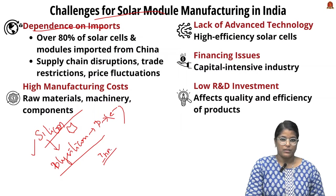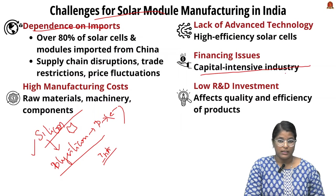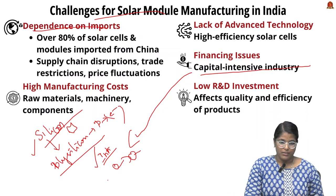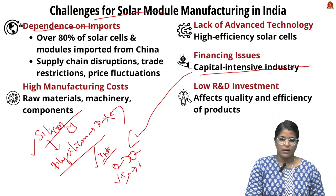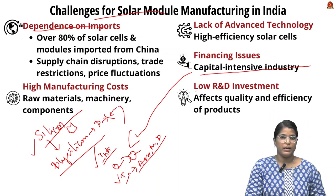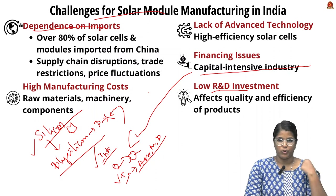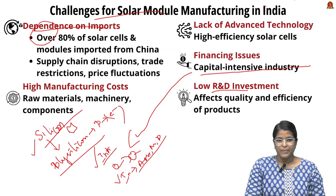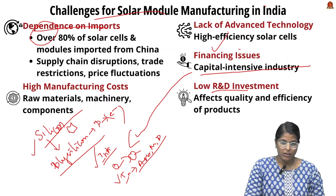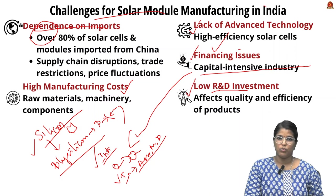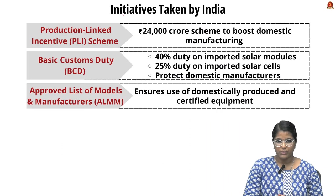China has developed the entire value chain — from mining silica to converting it into modules — including assembly, manufacturing, production infrastructure, and strong R&D. That is why India is reliant on China to import solar modules. India faces challenges including import dependence, higher manufacturing costs, lack of advanced technology, financial instability, and very low R&D in this sector.